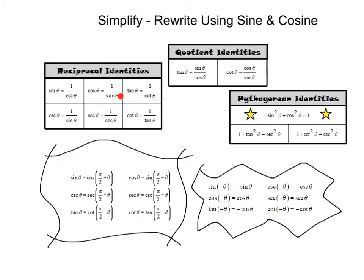Hi everybody, here before us I've got all the tools we've discussed so far in regards to identities. We've got our reciprocal identities, quotient identities, Pythagorean identities, and our cofunction and odd even identities.